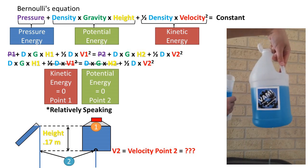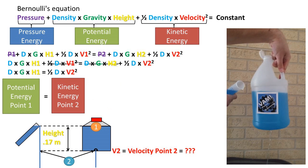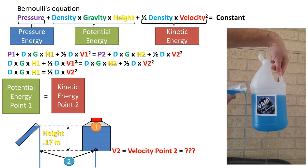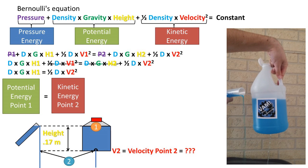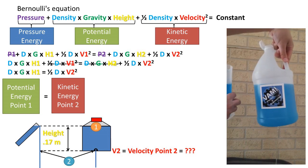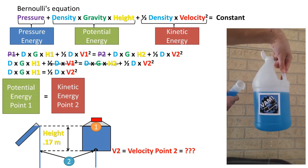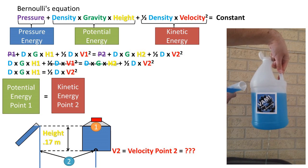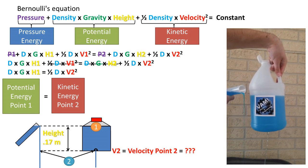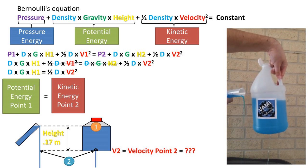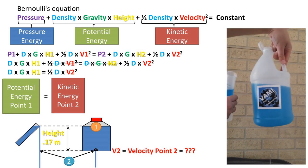We are left with the density times gravity times height 1 being equal to one-half density times velocity squared, or in other words, potential energy at point 1 equals kinetic energy at point 2. So the potential energy at point 1 is transferred into kinetic energy at point 2.